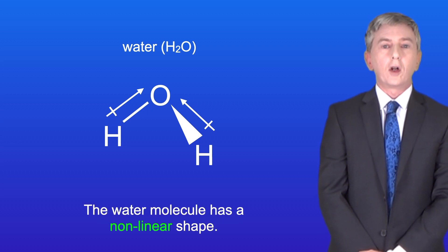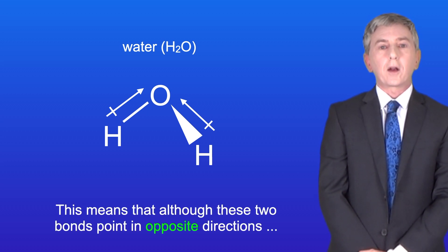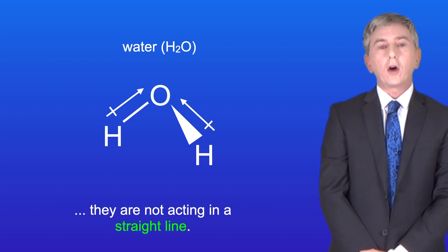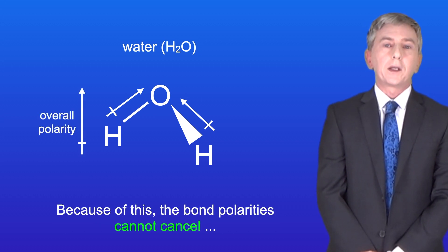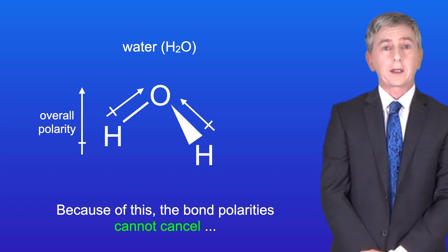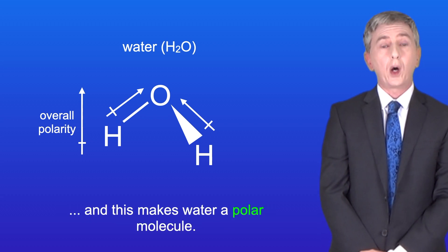The water molecule has a non-linear shape, so this means that although these two bonds point in opposite directions, they are not acting in a straight line. Because of this, the bond polarities cannot cancel, and this makes water a polar molecule.